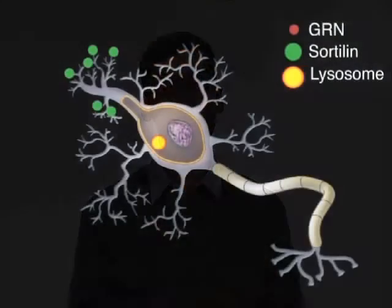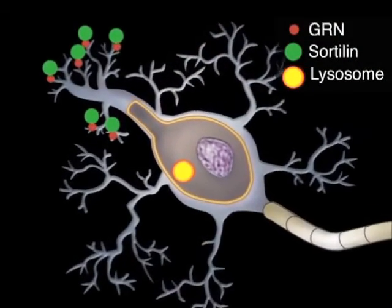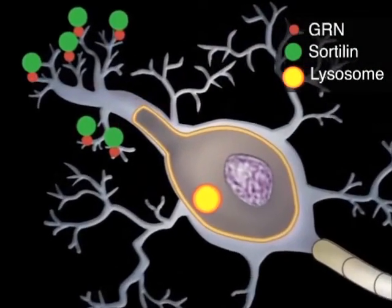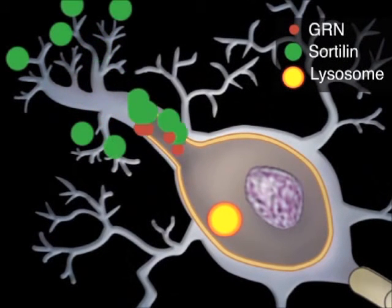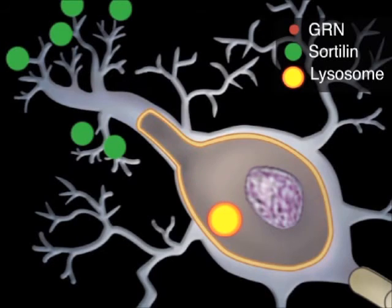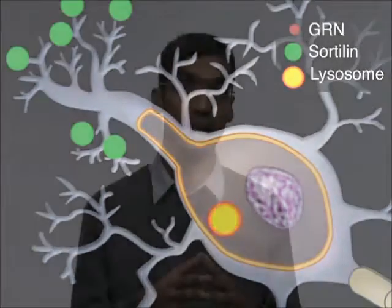We show that progranulin that has been internalized by sortilin actually ends up in lysosomes, which are organelles that help to degrade cellular material. We also found that progranulin levels are in fact regulated by sortilin in mice. In a normal animal, progranulin is present at a detectable concentration in the brain and in the serum.